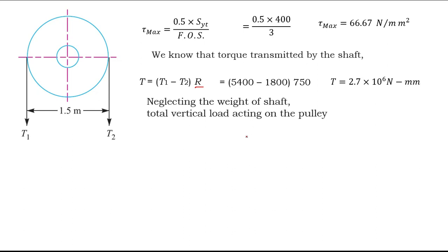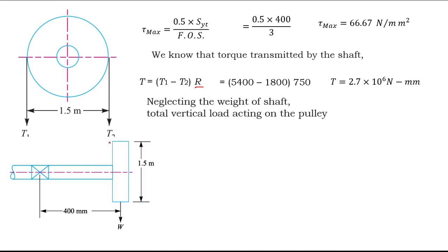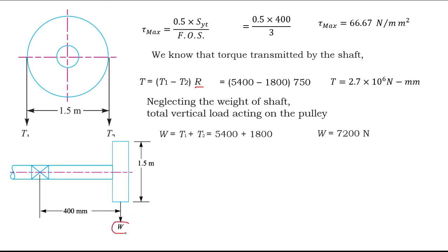We are neglecting the self-weight of the pulley. T1 and T2 are both acting in the downward direction only. To calculate the total downward load, we add the tension on the tight side and the slack side: W equals T1 plus T2. Putting in the values, the total downward load W is equal to 7200 N.